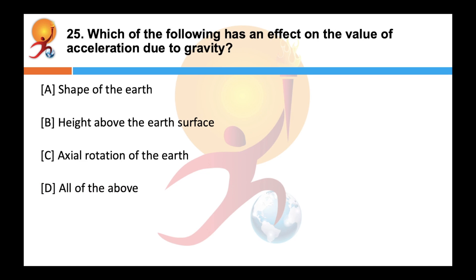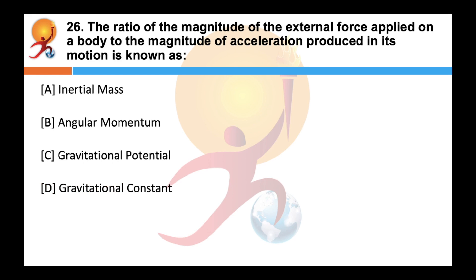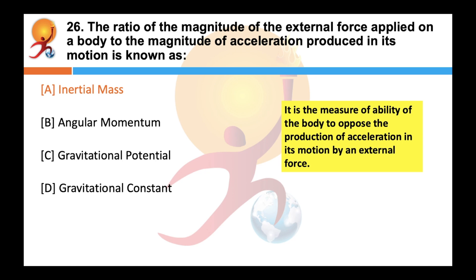Which of the following has an effect on the value of acceleration due to gravity? Correct answer is all of the above. The value of acceleration due to gravity varies due to the shape of the earth, height above the surface, depth below the surface, and axial rotation of the earth. The ratio of the magnitude of external force applied on a body to the magnitude of acceleration produced in its motion is known as inertial mass — it measures a body's ability to oppose the production of acceleration by an external force.